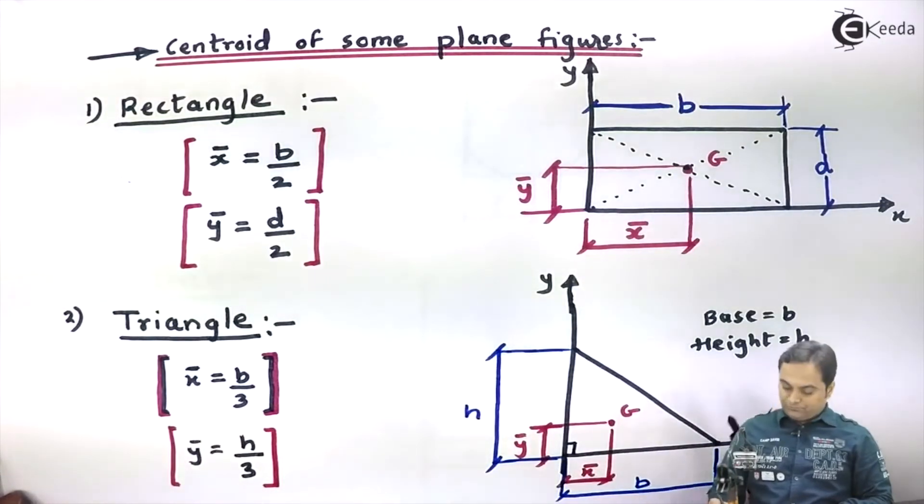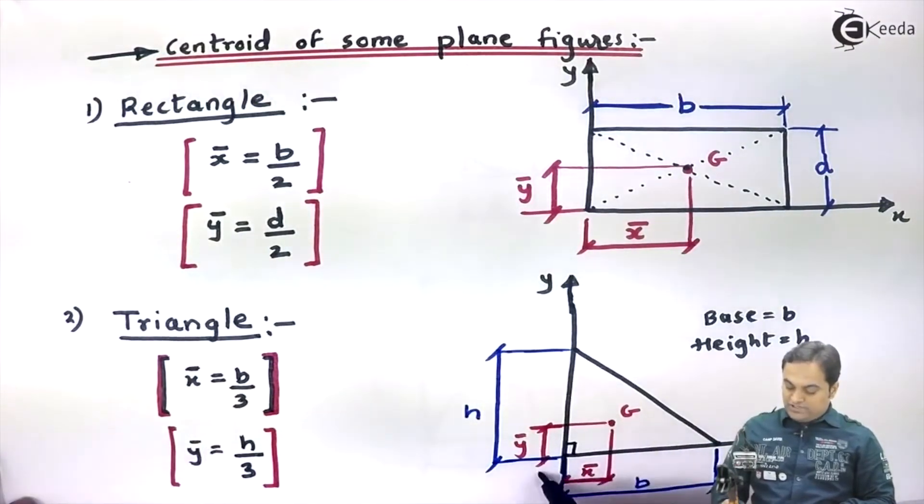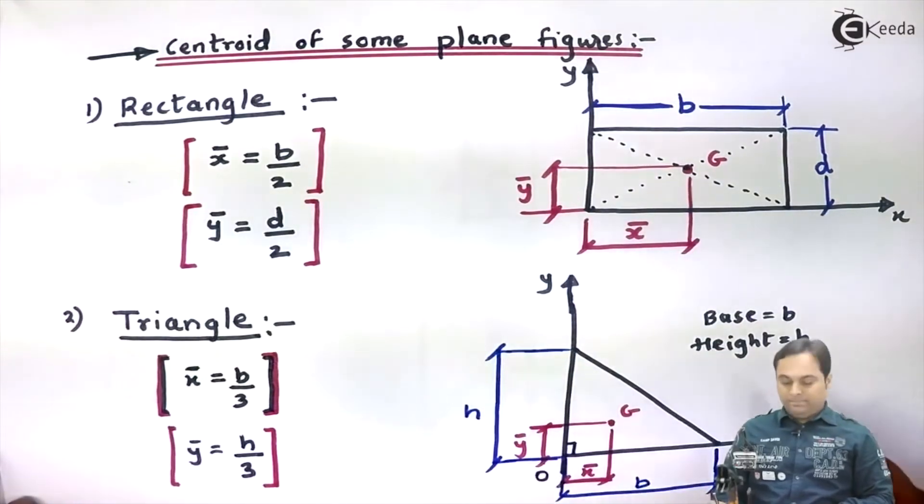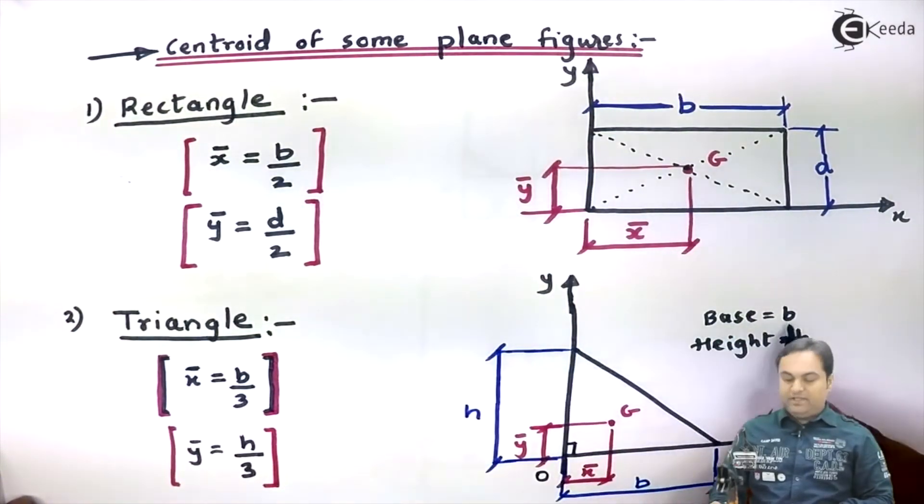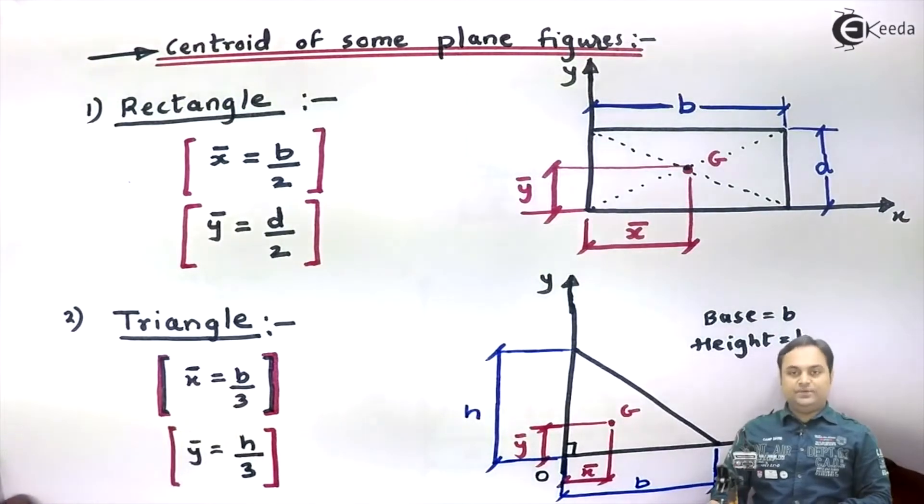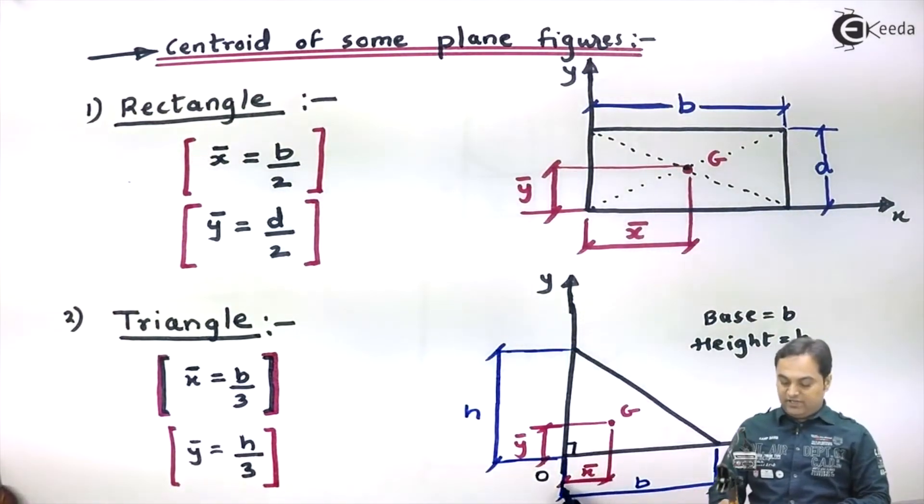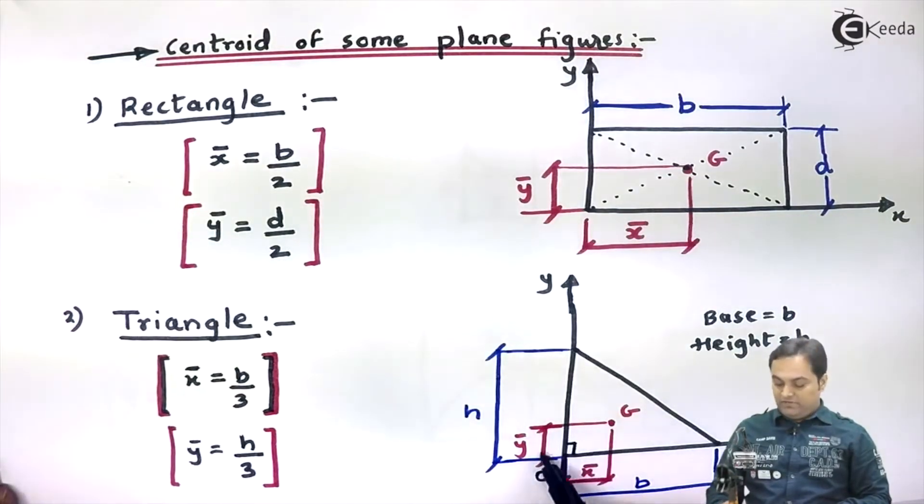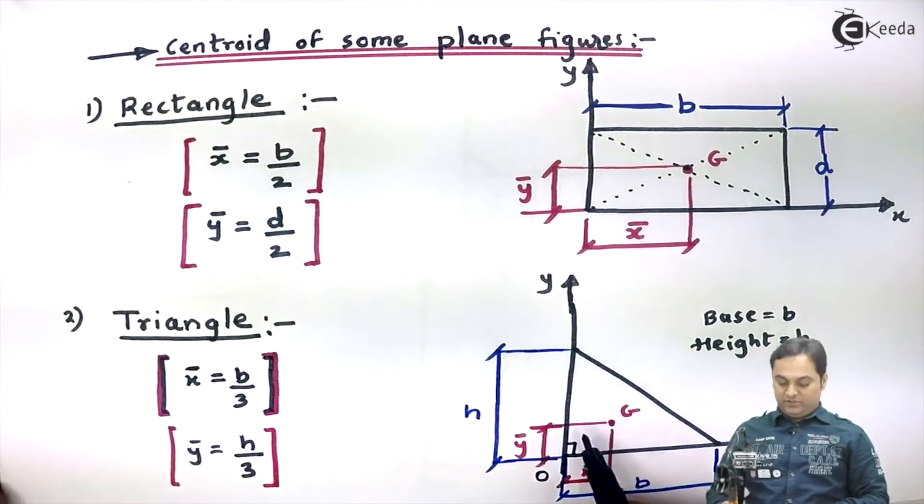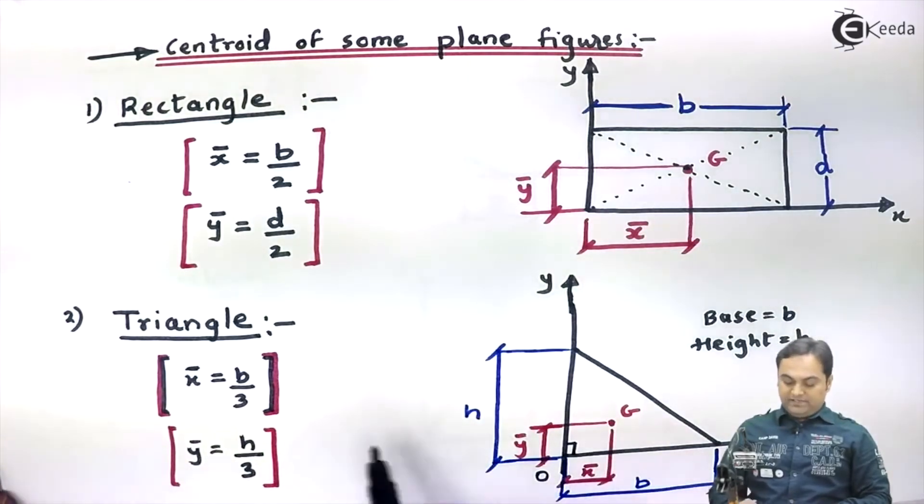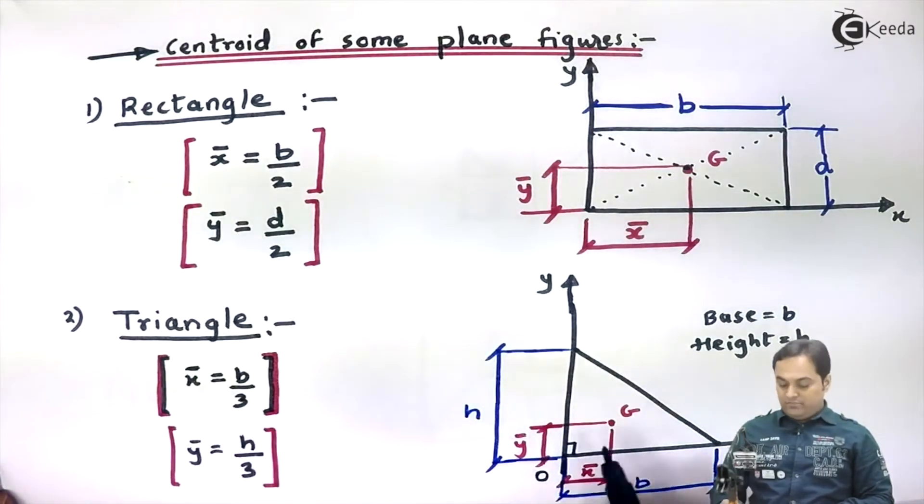Now here I am considering a right angle triangle, but this is applicable to any other triangle also. If we are having a triangle which is kept at the origin, the triangle has base B and height H. So centroid is located at distance of x̄ and ȳ.